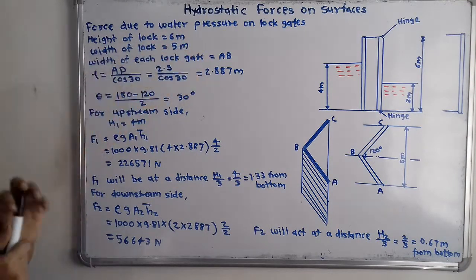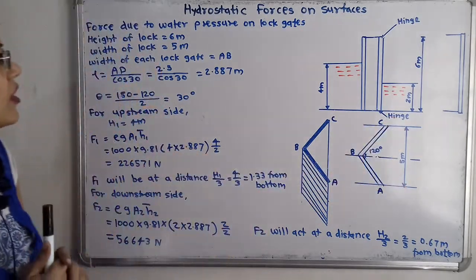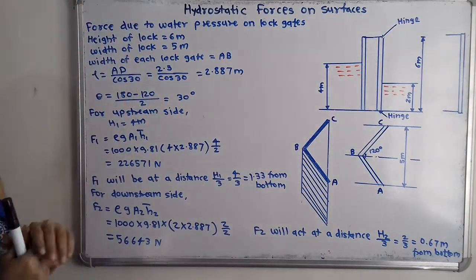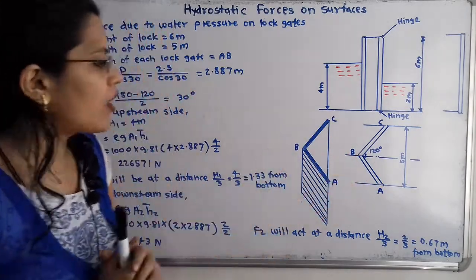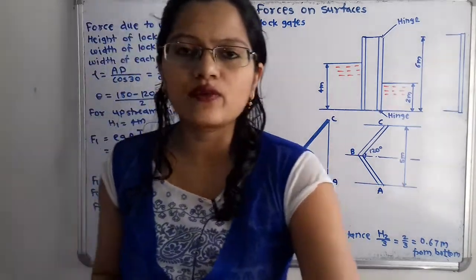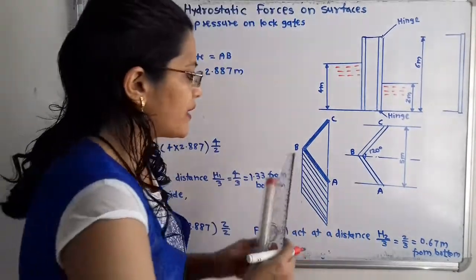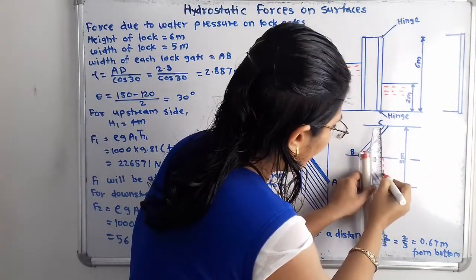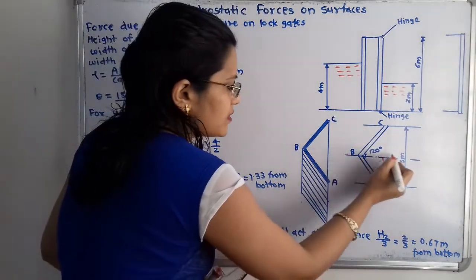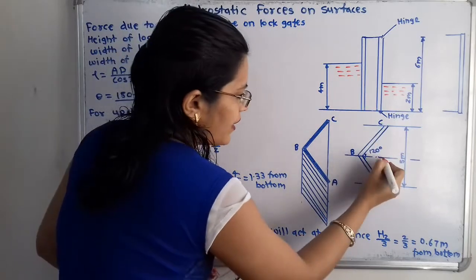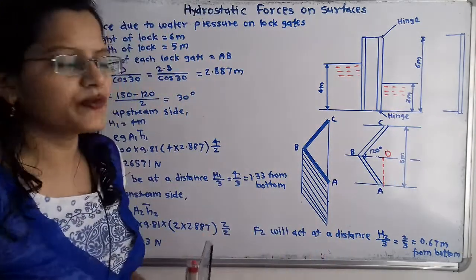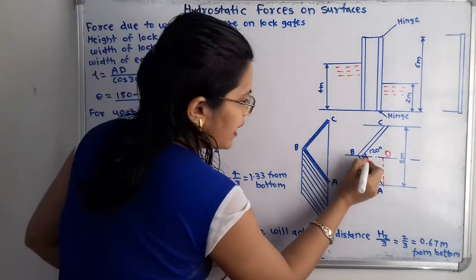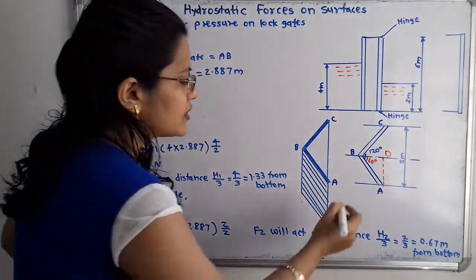The given data: height of the lock is 6 meters, width of the lock is 5 meters, and width of each lock gate — AB and BC — we will call this length L. To calculate L we make one construction: from point B we draw a vertical center line passing through AB and BC, and the point of intersection will be point D. Because of the center line, the total angle of 120 degrees is divided into two parts of 60 degrees each.